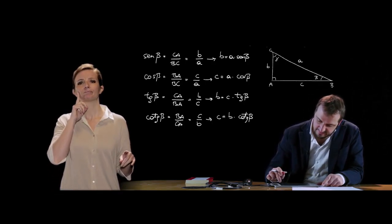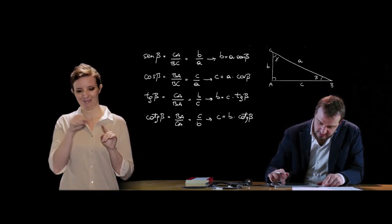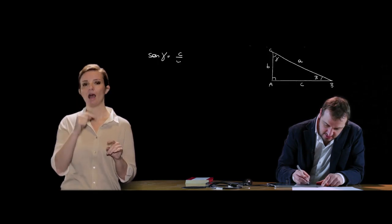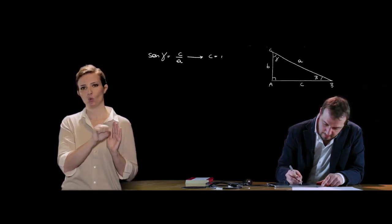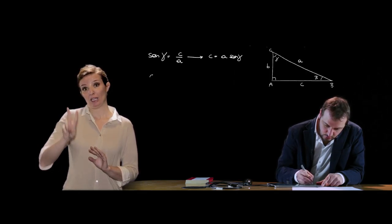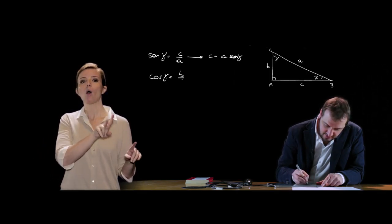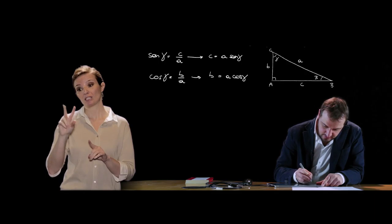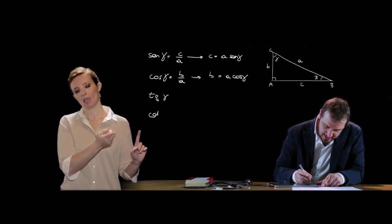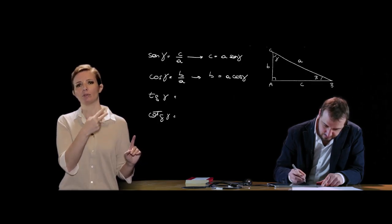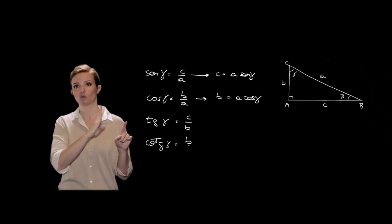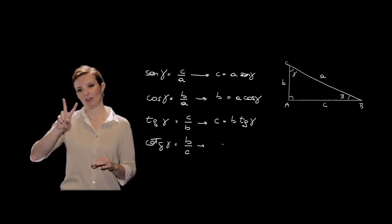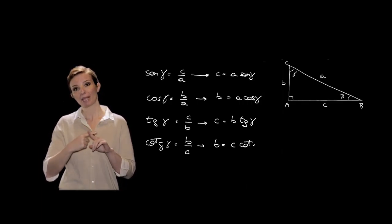Lo stesso discorso possiamo farlo considerando l'altro angolo acuto, quindi γ. Applicando le definizioni: il seno di γ sarà pari a C/A, e quindi C è pari ad A·sin(γ); il coseno di γ è uguale a B/A, e quindi B sarà dato da A·cos(γ); la tangente e la cotangente di γ saranno pari rispettivamente a C/B e B/C, e quindi C = B·tan(γ) e B = C·cot(γ).